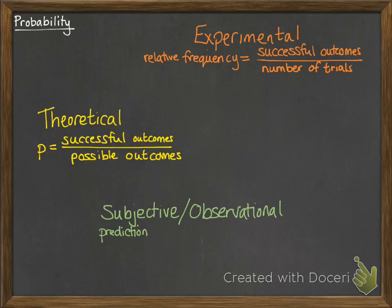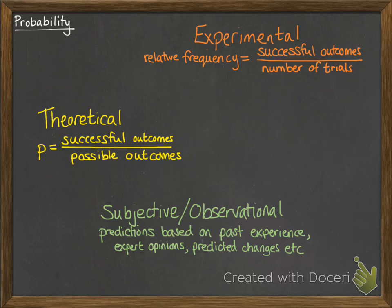Subjective and observational is making predictions based on past experiences or expertise. It's things like predicting the weather or how much crime you think would happen in an area. There are no hard and fast rules about it, but you would look at things that have happened before, how you expect things to change within that area, and what's going to happen later on.